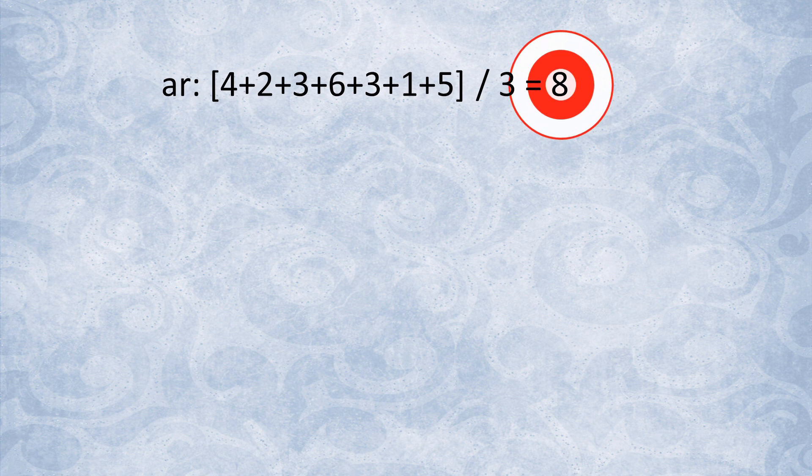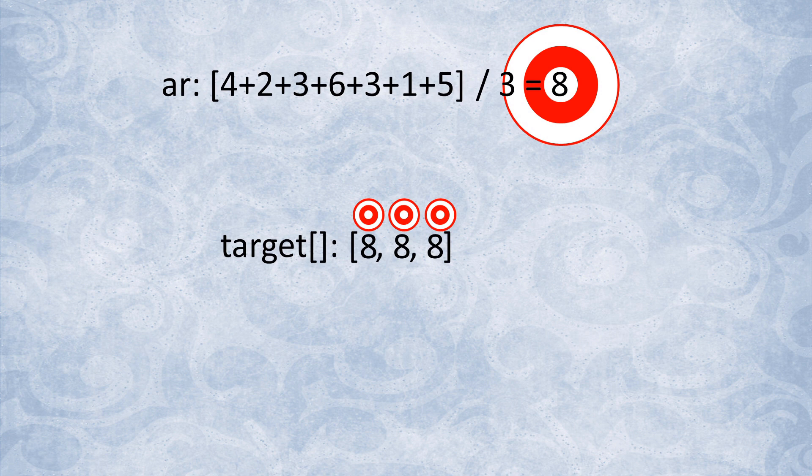But barring those special easy cases, we then create an array of size k, initialized to the target value, which in our example is 8. Then, we'll be picking a value from the input array, decreasing one of the targets by that value, and repeating until the target reaches 0.